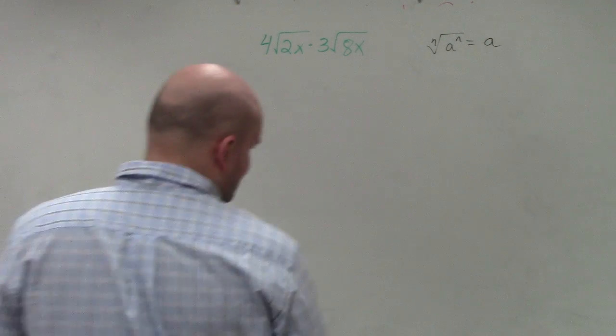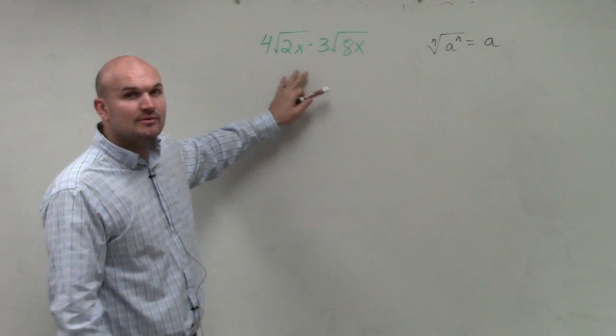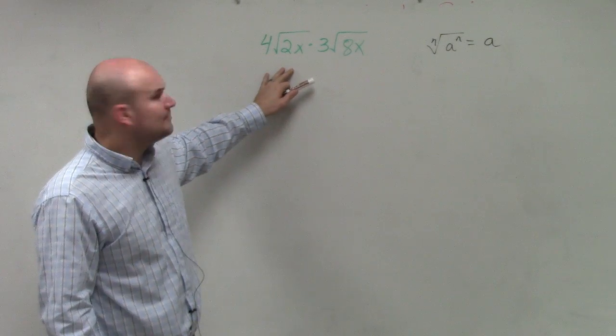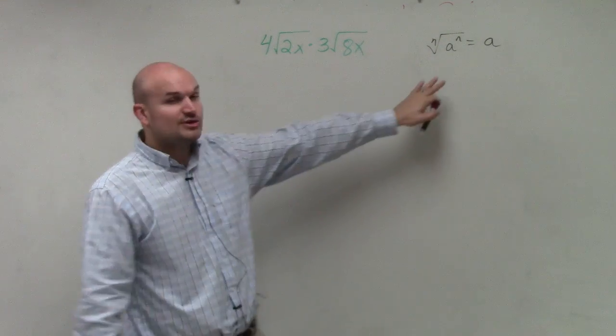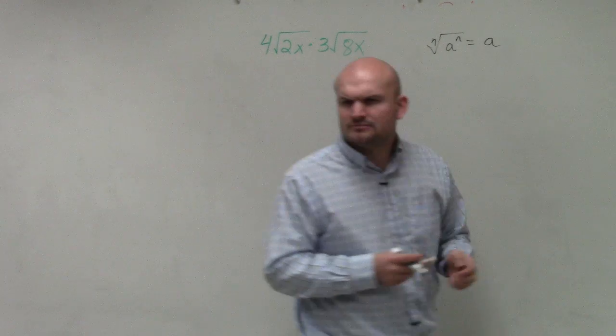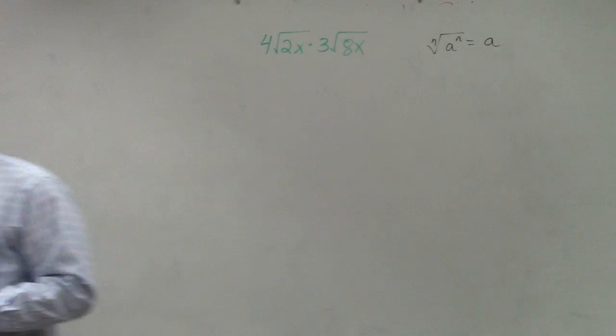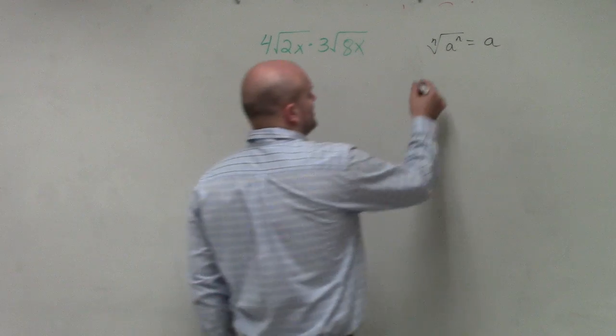So in this example, ladies and gentlemen, what we're going to do is, again, when we're looking at this, first thing I told you guys with the multiplication, we have another rule. So we talked about the identity element for simplifying. The next element would be the multiplication.